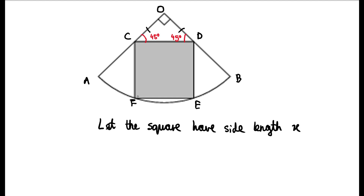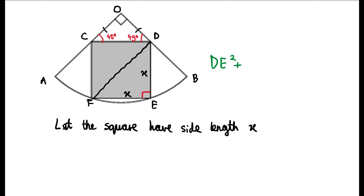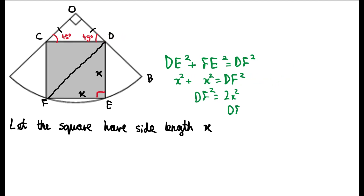Now let's draw in the diagonal of the square DF. Since a square has four right angles, angle FED is clearly 90 degrees, and both sides FE and DE are sides of the square so they both have side length x. Triangle DEF is a right triangle and we know the length of the legs, so we can use Pythagoras' theorem to find the length of DF. We have DE squared plus FE squared equals DF squared. DE is x and FE is x, so this gives us DF squared equals 2x squared, and therefore DF is equal to x root 2.